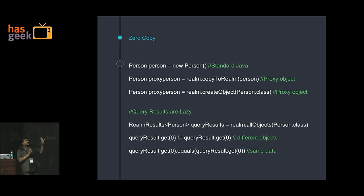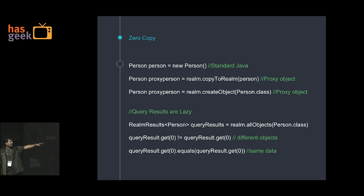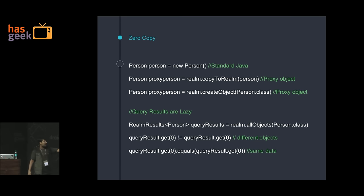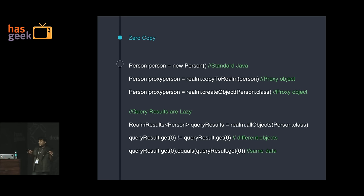All Realm objects are standard Java objects. When you query, you get the results — it is all lazy loading. When you try to compare the objects they are different, but if you try to compare the data it is the same. It is not copying the whole object into memory but just pointing to it, and at the time you need it, it goes and creates that object.